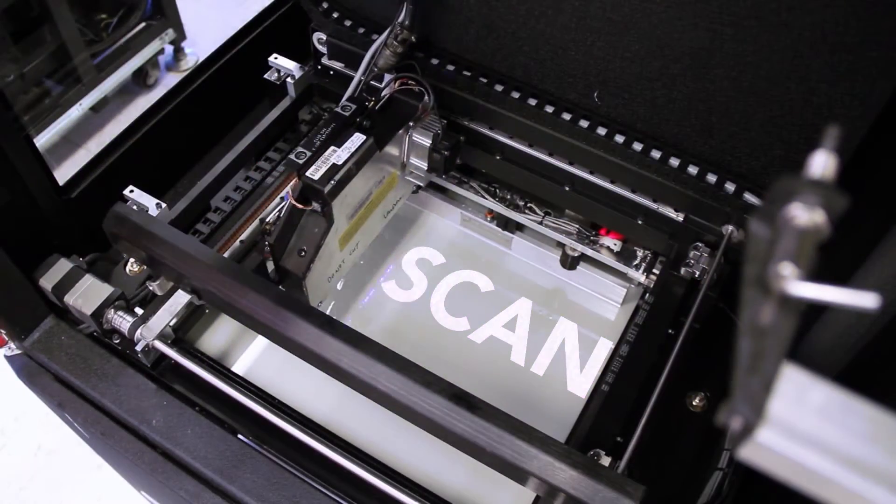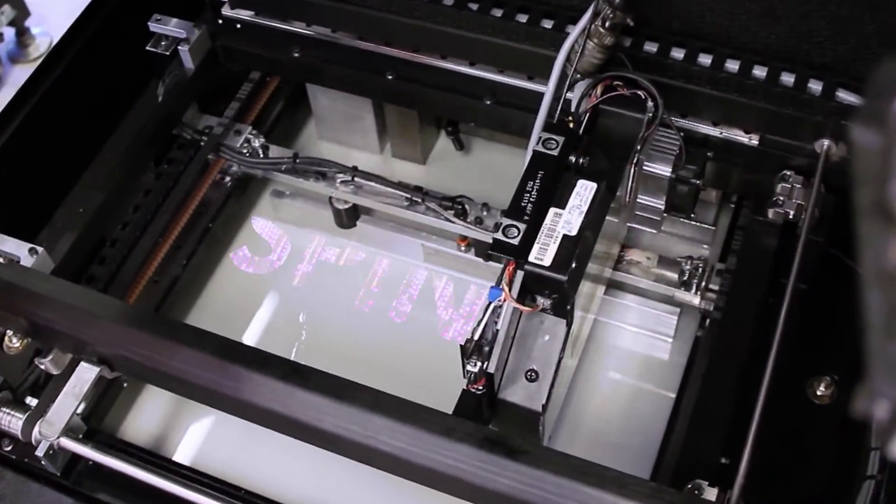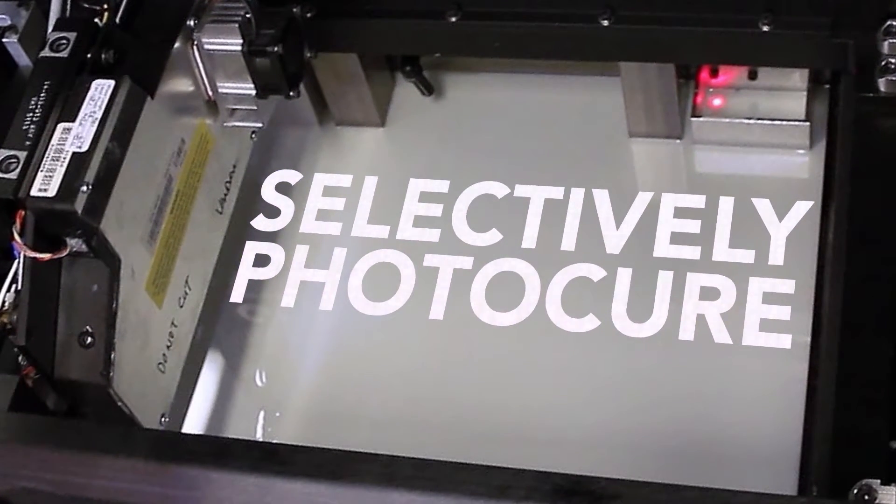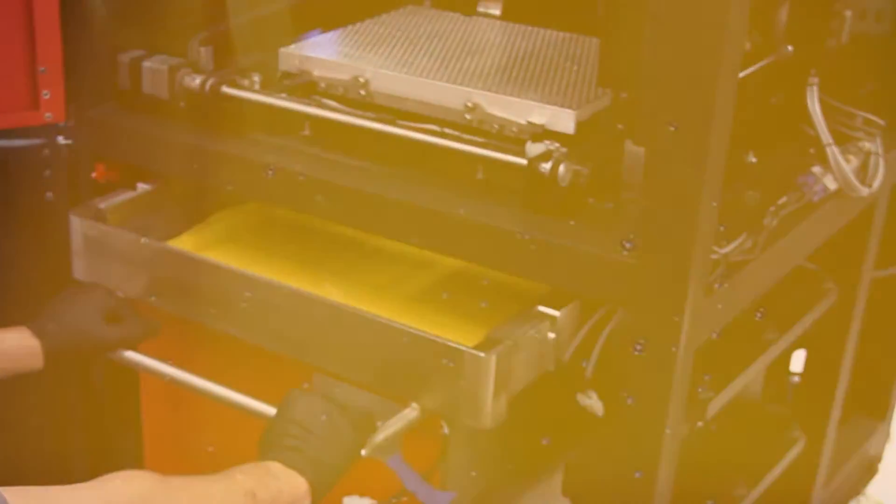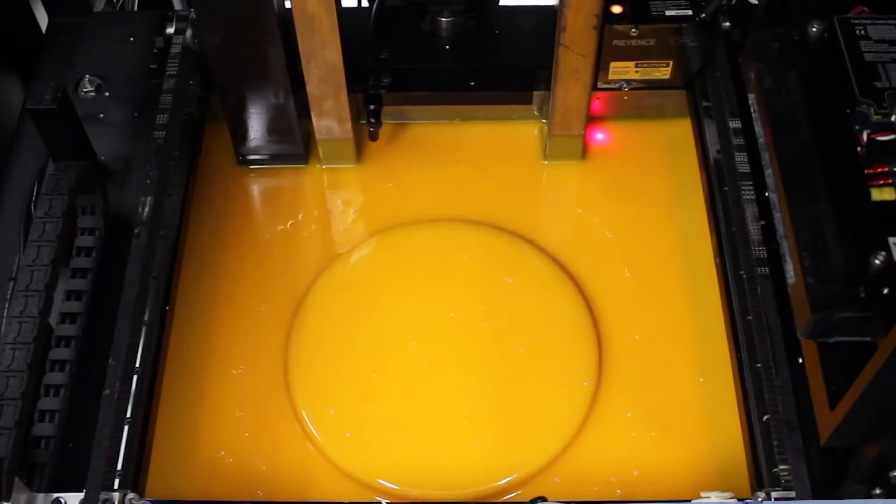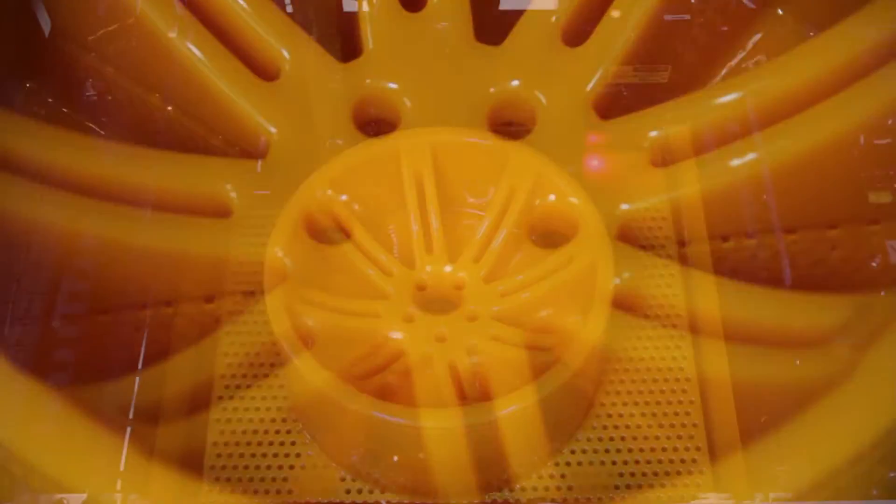Both the Xtreme and the XSEDE use EnvisionTech's patented technology of 3SP. 3SP stands for Scan, Spin and Selectively PhotoCure. The 3SP technology allows us to take a laser that's scanning over a vat of photopolymer resin that solidifies when exposed to the light of the laser. It allows for high detail accuracy and exceptional surface finish.